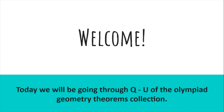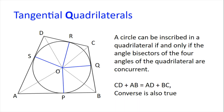Welcome! Today we will be going through Q to U of the Olympiad Geometry Theorems Collection. First up, we have Q for quadrilaterals that are tangential.